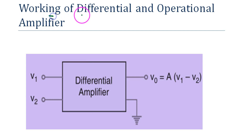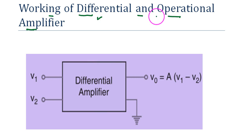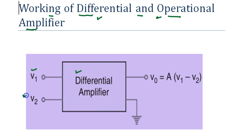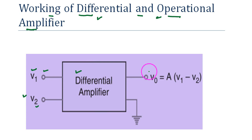A differential amplifier is a key to understanding the op-amp. In a differential amplifier, V1 and V2 are the two input signals. The differential amplifier gives an output V0 that is proportional to the difference between the two inputs.